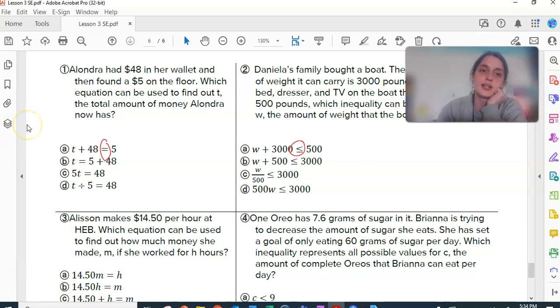So, B would be your answer. Alondra had $48 in her wallet and then found a $5 bill on the floor. Which equation can be used to find out T? The total amount of money. So, usually when you are finding out T, that means T is your answer. It only actually looks like there's one of those. And, if you have 48 and you find five, that is an additive relationship. So, B would be your answer.